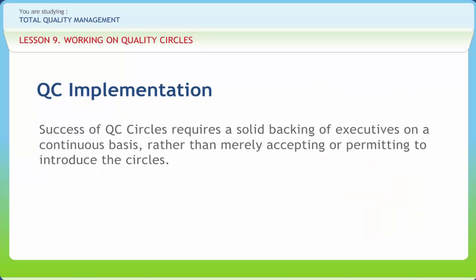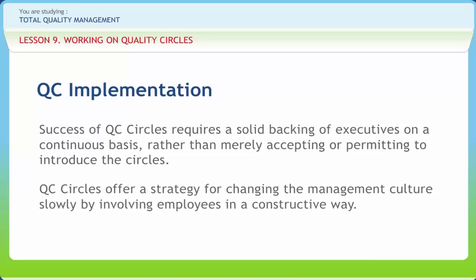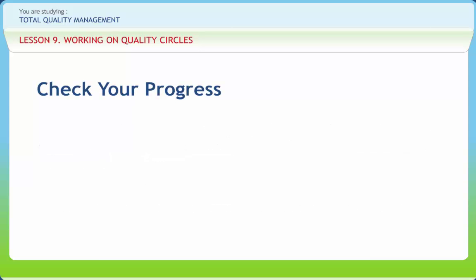Success of QC Circles requires solid backing from executives on a continuous basis, rather than merely accepting or permitting their introduction. It becomes necessary to spend a great deal of time and have patience to achieve the involvement of workers. QC Circles offer a strategy for changing the management culture slowly by involving employees constructively. They require top management support; personal characteristics of facilitators are critical; the scope of projects needs to be small enough to be capably addressed by the team; and success of other teams has a positive peer pressure effect.